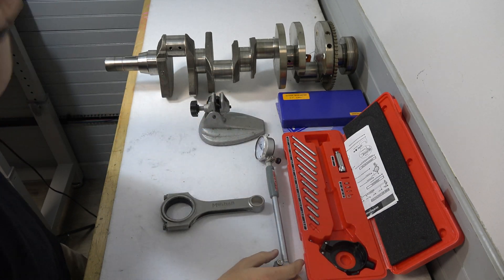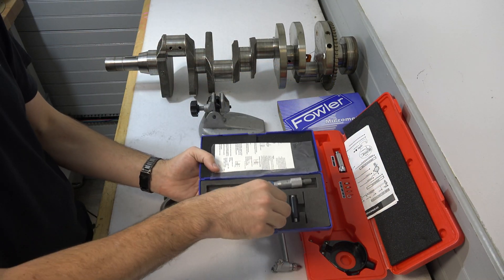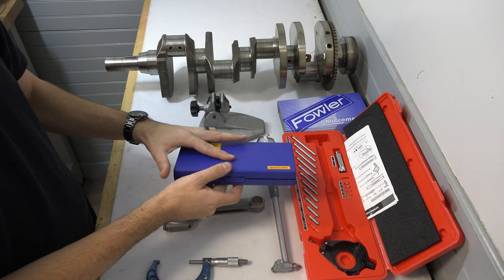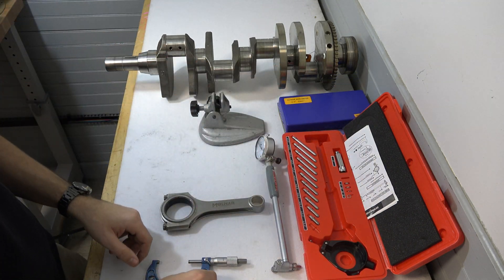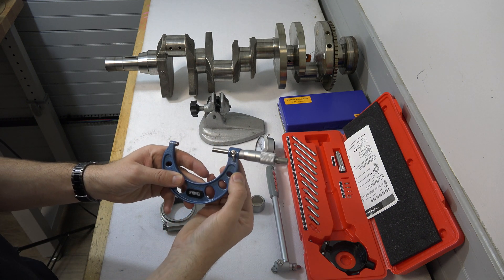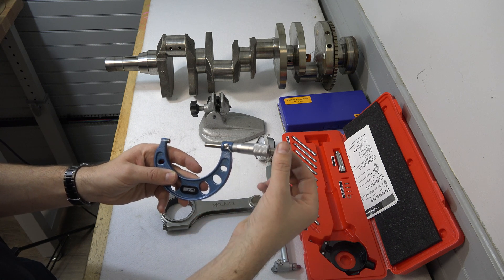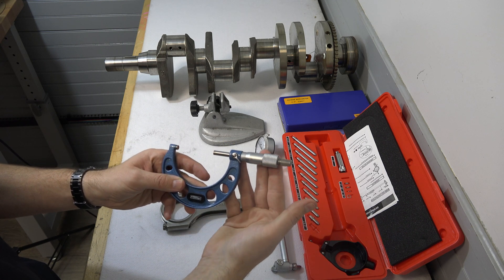And next thing we're going to do, we're going to grab our micrometer here. We're going to unlock it here. Forward is locked, rearward is unlocked. This lets you rotate our thimble here.